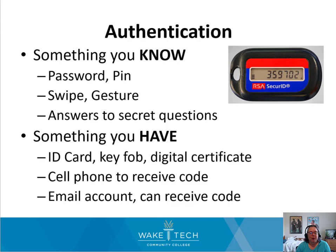Something you know and something you have. The something you have is usually a digital certificate, but it can be a physical thing like a key fob. The RSA key fob is one of the smartest and earliest in the industry for having secondary and encrypted information to help you get logged on. This little device on the screen provides a PIN that only works with the software that is nearby — it has to be physically near the laptop. It provides a PIN based on a certificate back at the office, and it only provides that PIN for a matter of seconds and only to that particular user. It's encrypted.